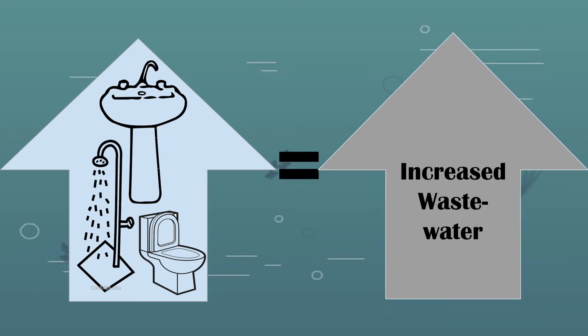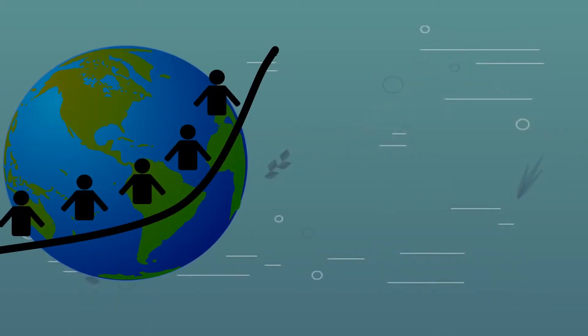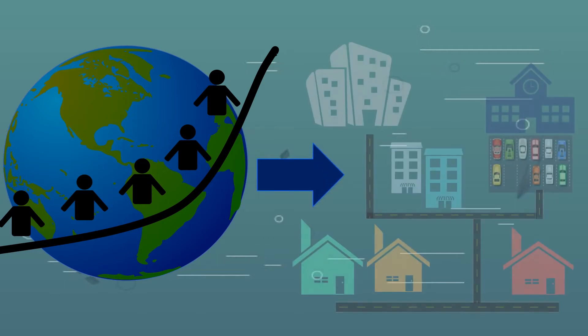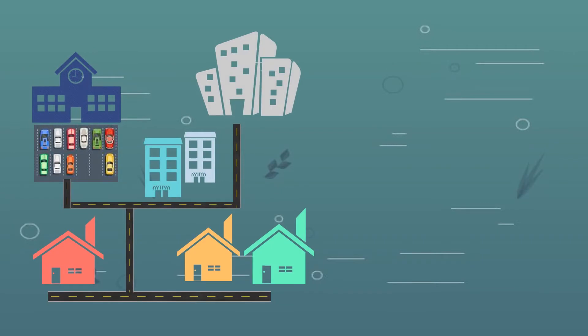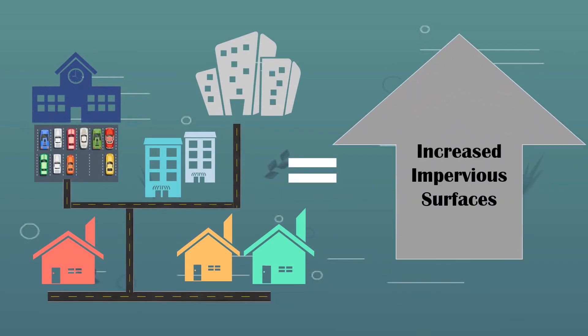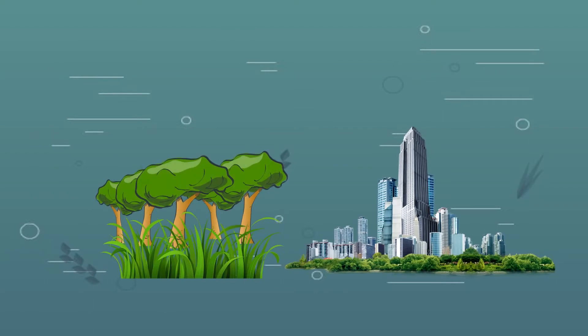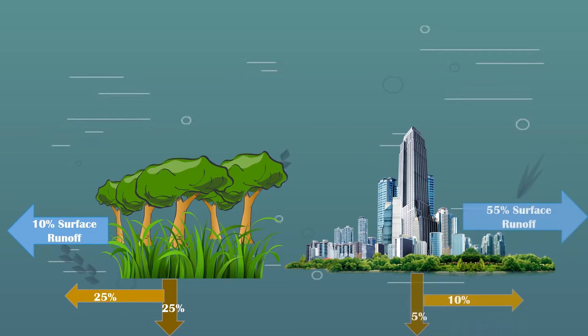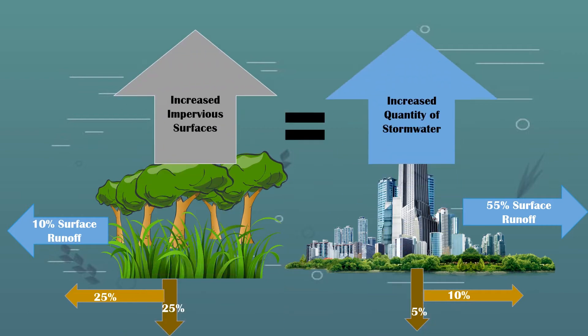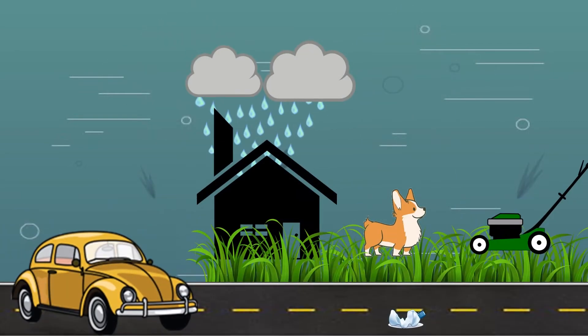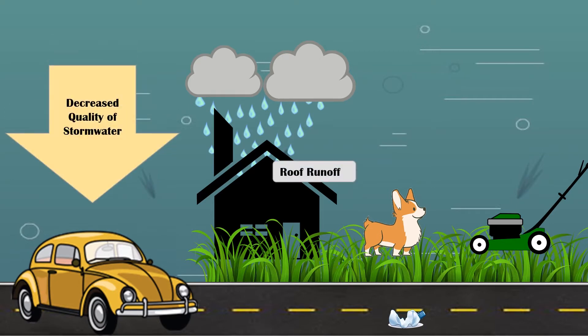Another effect of more people and urbanization is more buildings and increased impervious surfaces, meaning that water can no longer infiltrate or soak into the earth like a sponge. This increase in impervious surfaces can result in a 45% increase in surface runoff, with only 15% of precipitation infiltrating into the ground. Increased impervious surfaces mean increased stormwater, and this increased quantity of stormwater carries a decreased quality due to the effects of urbanization.